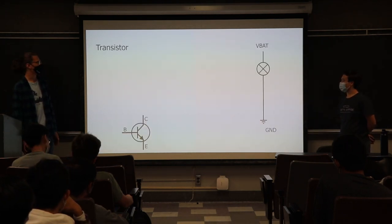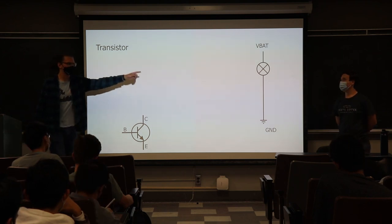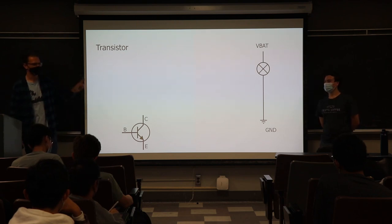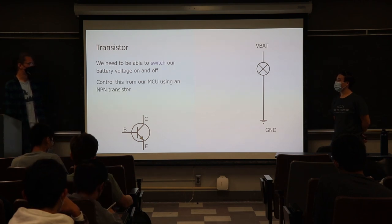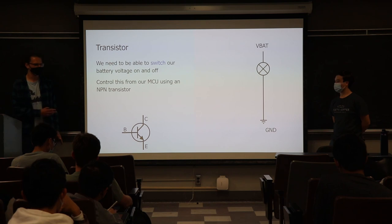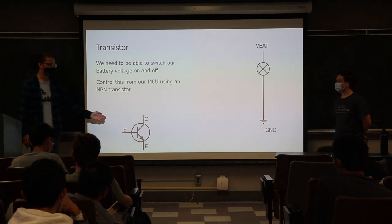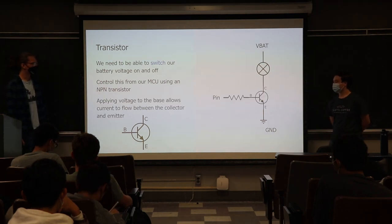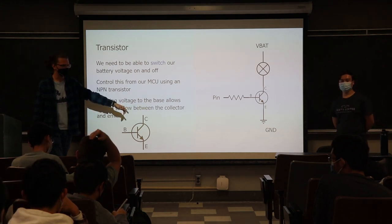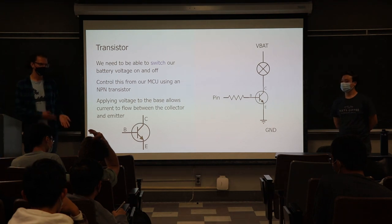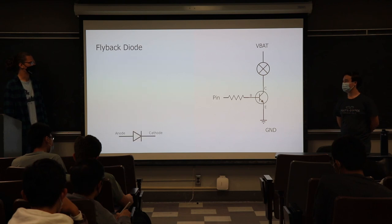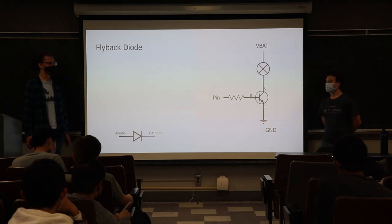The first thing we're going to use to enable this is a transistor. The idea is that we want to use our battery voltage to power the motor. We hook our microcontroller pin to the transistor's base — when you apply a voltage to the base, current flows from the collector to the emitter, acting as a switch. Depending on whether our pin is on or off, current can flow from the battery to ground, allowing us to turn the motor on and off using battery voltage rather than the pin voltage.